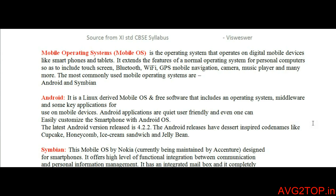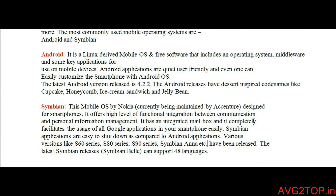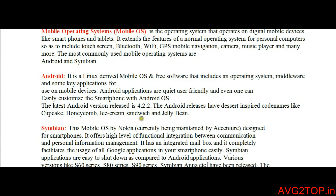With Symbian, you can manage all your personal information, and it offers good functionality for communication. It responds based on the inputs and features you select. There are various series of Symbian OS: S60, S80, S90, and Symbian Anna. In Android, the latest version mentioned is Jelly Bean, and there are several other Android versions as well.